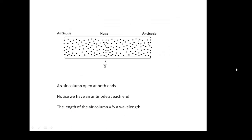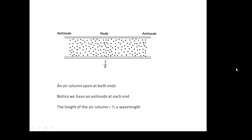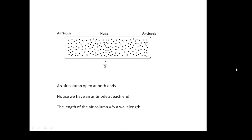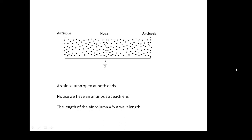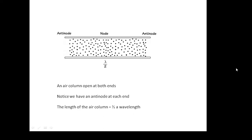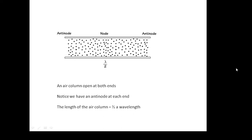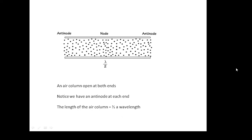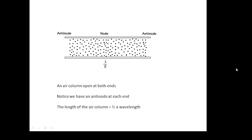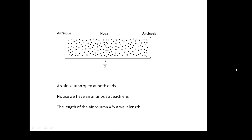This tube is open at both ends. Following the rules from before, that means both ends have to be anti-nodes, and we have a node in the middle. The fundamental frequency will be very different, and the wavelength of the fundamental will be very different too. An air column open at both ends has an anti-node at each end and a node in the middle, and the length of the air column is half a wavelength — not a quarter, but half a wavelength.